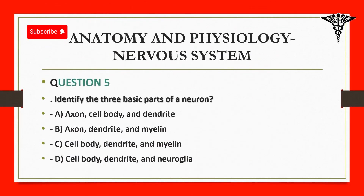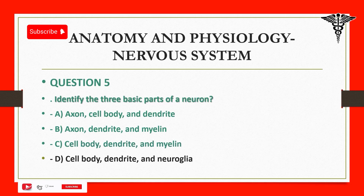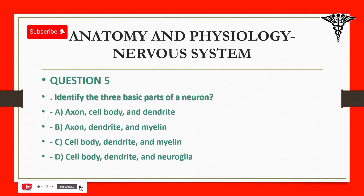Question 5: Identify the three basic parts of a neuron. A. Axon, cell body, and dendrite. B. Axon, dendrite, and myelin. C. Cell body, dendrite, and myelin. D. Cell body, dendrite, and neuroglia.